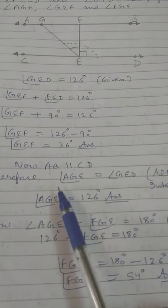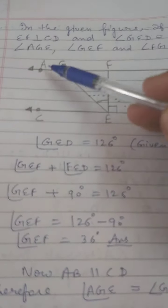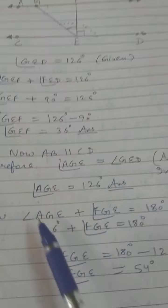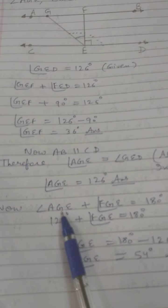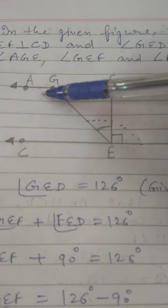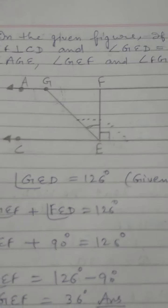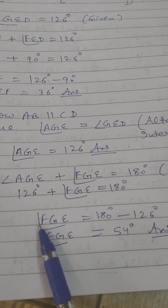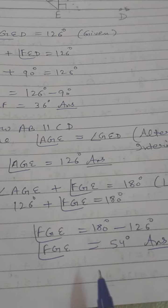Now AB is parallel to CD, so angle AGE equals angle GED as alternate interior angles. Since GED equals 126°, angle AGE equals 126°. Now angle AGE plus angle FGE equals 180° as a linear pair on line AB. Therefore 126° plus angle FGE equals 180°, so angle FGE equals 180° minus 126° equals 54°. Therefore angle FGE equals 54°.